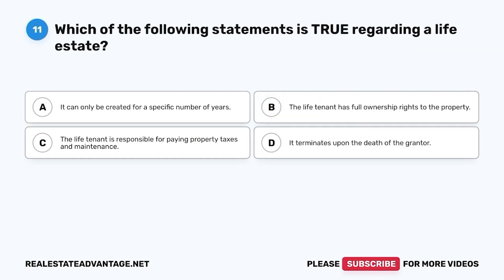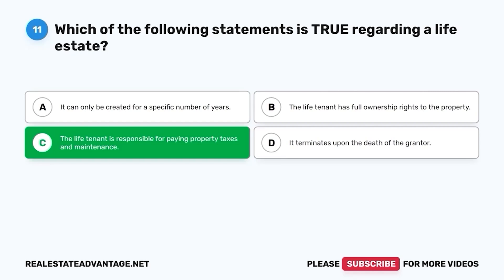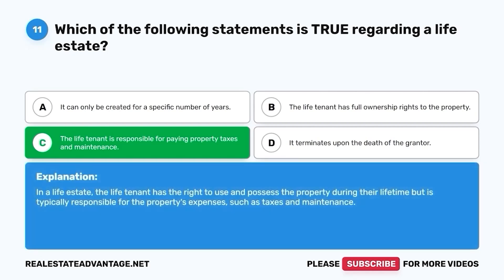Question 11. Which of the following statements is true regarding a life estate? A. It can only be created for a specific number of years. B. The life tenant has full ownership rights to the property. C. The life tenant is responsible for paying property taxes and maintenance. D. It terminates upon the death of the grantor. The correct answer is C. The life tenant is responsible for paying property taxes and maintenance. In a life estate, the life tenant has the right to use and possess the property during their lifetime, but is typically responsible for the property's expenses, such as taxes and maintenance.